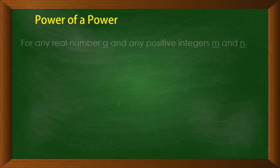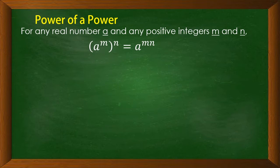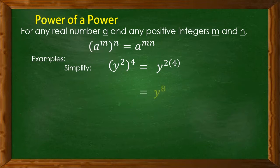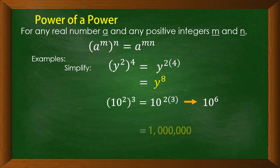The power of a power: for any real number a and any positive integers m and n, a raised to m to the power of n equals a — then multiply the exponents: m times n. For example, y raised to 2 to the power of 4 equals y raised to 2 times 4, which is y raised to 8. Same as 10 raised to 2 to the power of 3, which equals 10 raised to 2 times 3, or 10 raised to 6, which is 1 million.